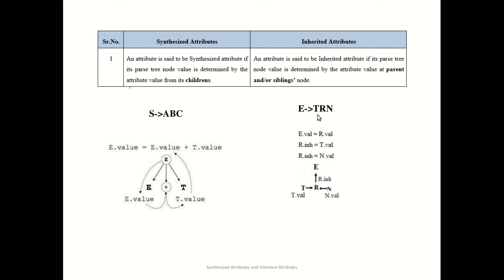In inherited attributes, the value is obtained from its parent or from a sibling. Consider the grammar E → TRN. Here, E.value is equal to R.value — E is getting its value from R. Then R.value is getting its value from T, which is its left sibling, and also from N, which is its right sibling. This is shown in the figure. This is possible in inherited attributes.